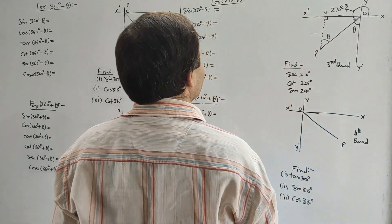Cot(270° + θ) = minus tan θ. For sec(270° + θ): sec is positive in the fourth quadrant. It is the case of 270°, so sec interchanges with cosec, giving cosec θ. For cosec(270° + θ): cosec in the fourth quadrant is negative, and it interchanges with sec, giving minus sec θ.